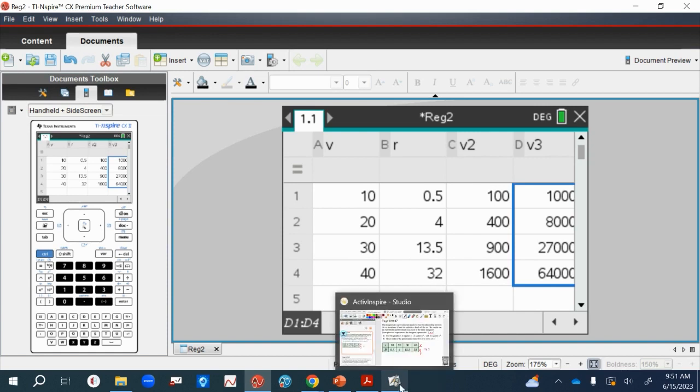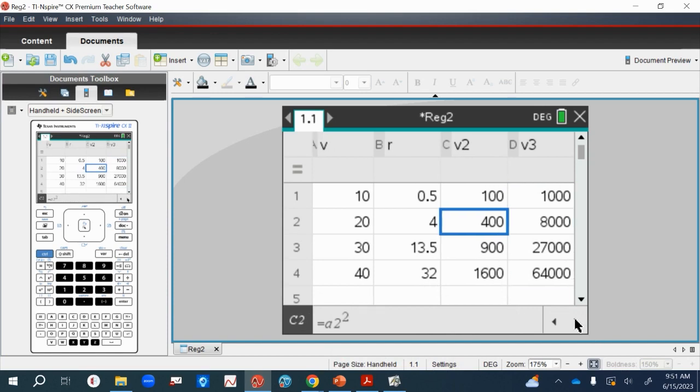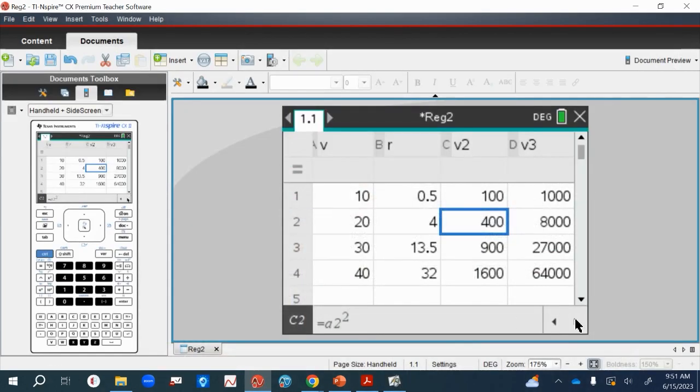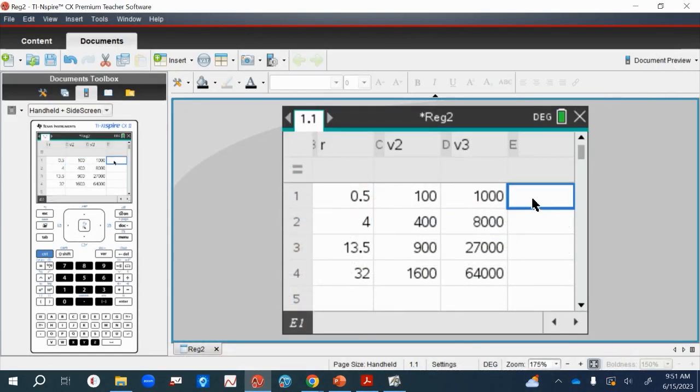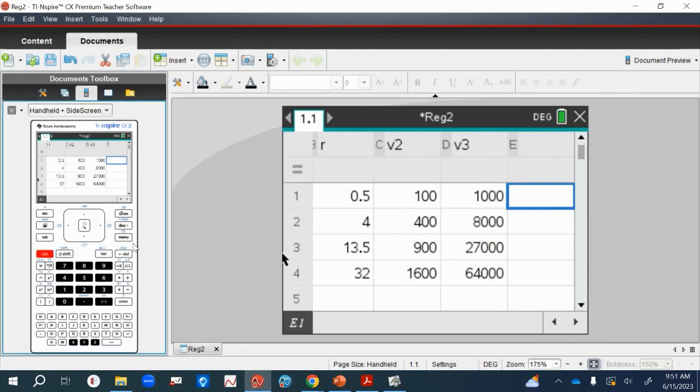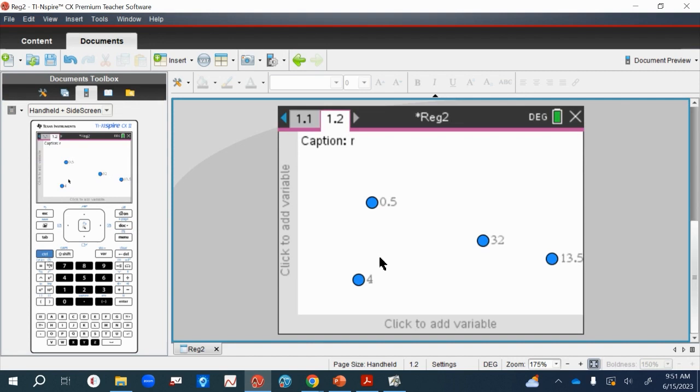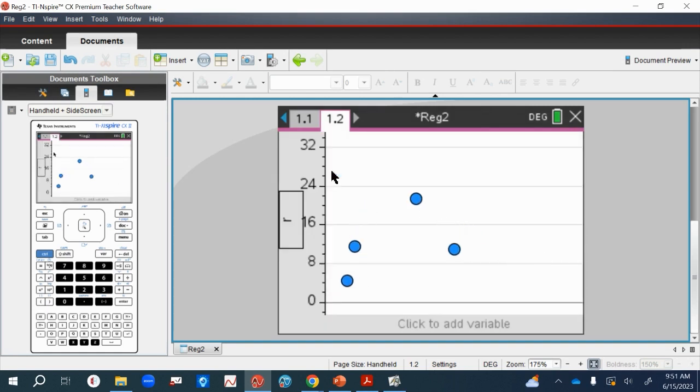Same thing here. So again, we're cubing v. So a1 to the power of three. And again, I am going to go to the corner here and drag it down. So I've got all my values for the three graphs I'm going to plot on my GDC.